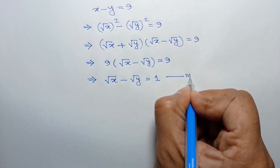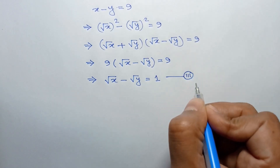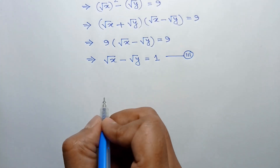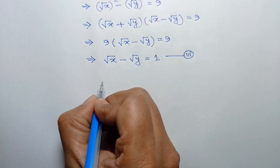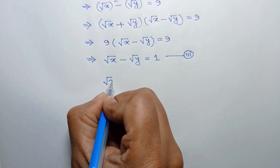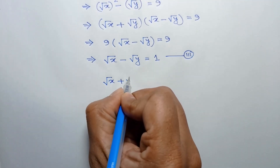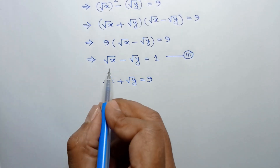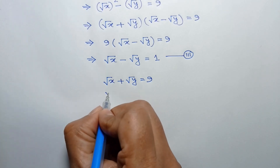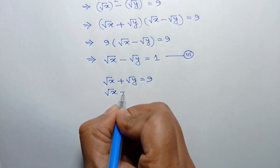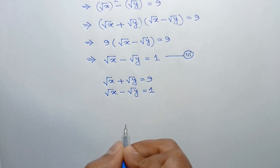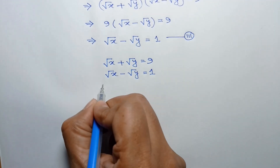Let's call this equation number 3. Now if we add equation 1 and equation 3, from equation 3 the value of square root of x minus square root of y is equal to 1.